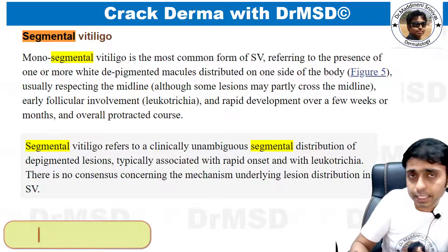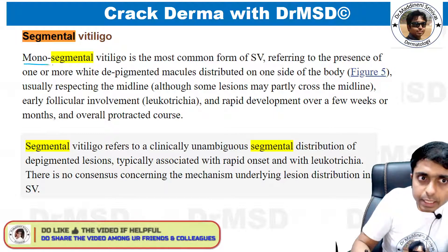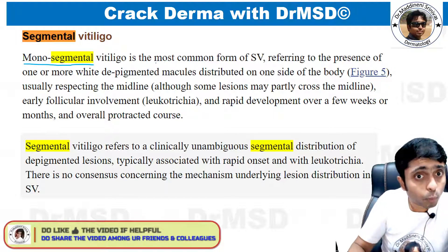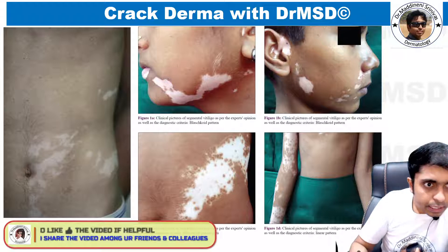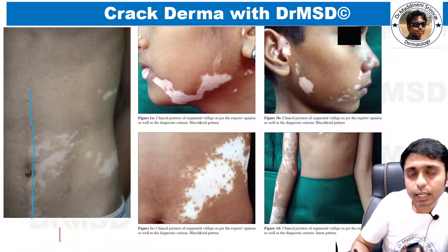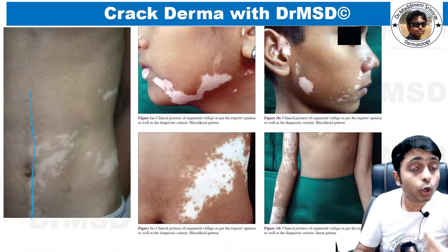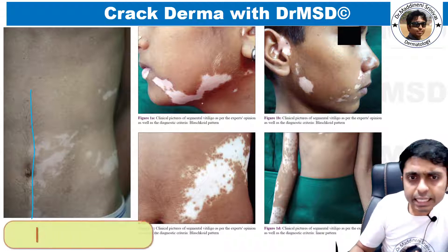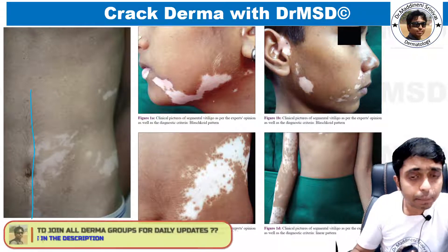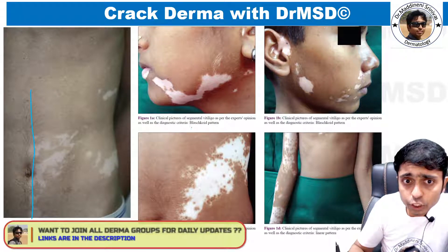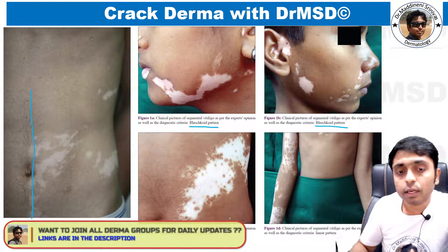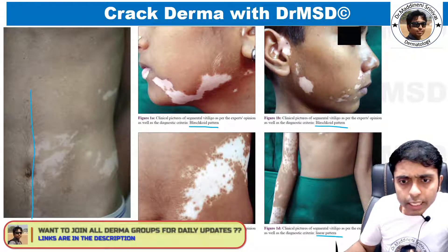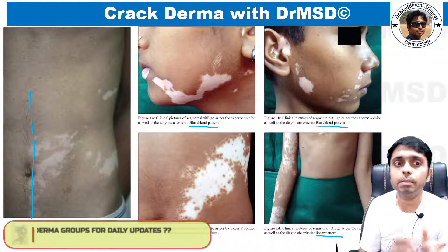In segmental vitiligo, monosegmental type is the most common form. Here you can see images of segmental vitiligo where the lesion does not cross the midline, following a blaschkoid pattern or a linear pattern.